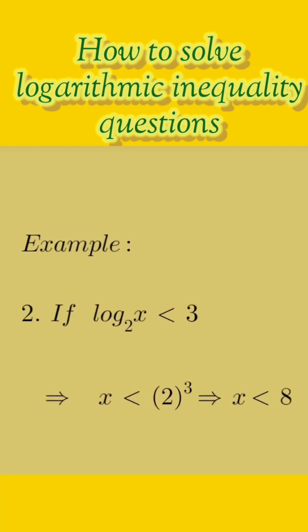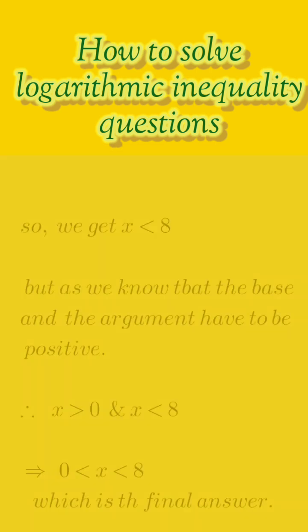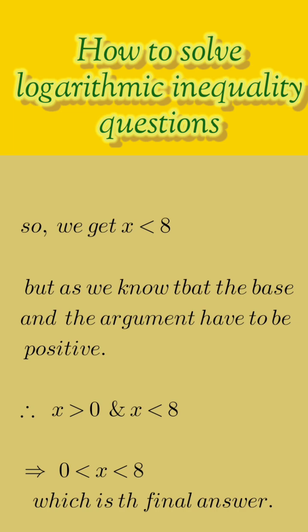Now, as per the requirement of the logarithmic function, x must be positive, so x has to be greater than 0 also. Hence, taking the intersection of x greater than 0 and x less than 8, the final answer is x lying between 0 and 8.